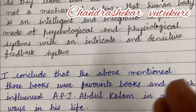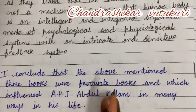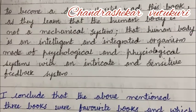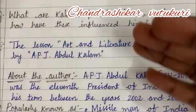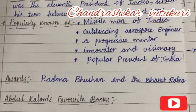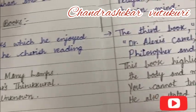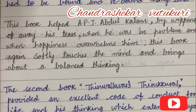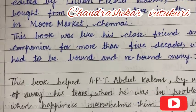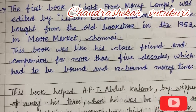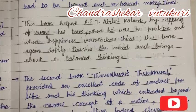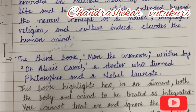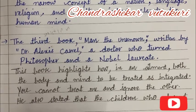What you are going to conclude is: 'I conclude that the above mentioned three books were Kalam's favorite books and influenced APJ Abdul Kalam in many ways throughout his life.' This concludes the answer — if it is asked for five marks, you are going to get five out of five marks. Everything depends on your style of presentation, usage of punctuation marks, and better handwriting. This video is dedicated to all students who asked how to write answers in the end examination. Please like, comment, subscribe, and share.